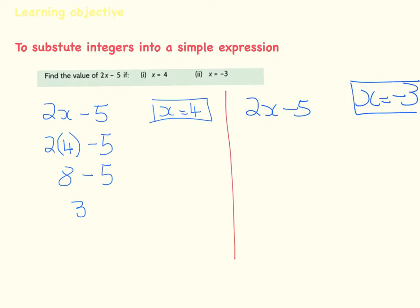So 2x, if x is minus 3, that's 2 of them. So it's 2 times minus 3 minus 5. You are multiplying this. 2 times minus 3 is minus 6 minus 5, which gives you minus 11.